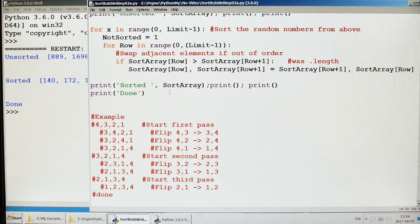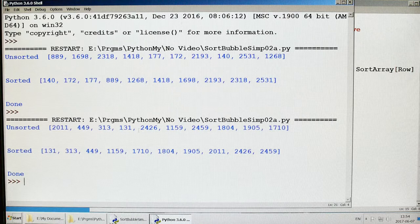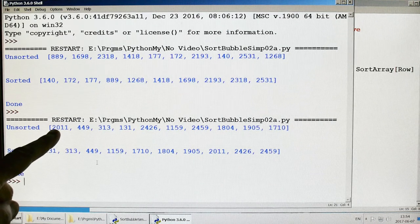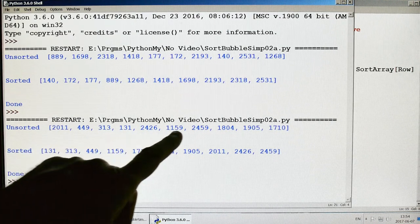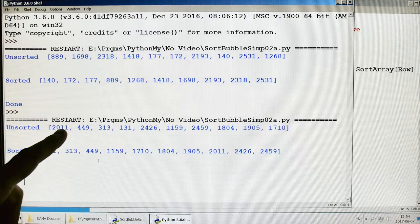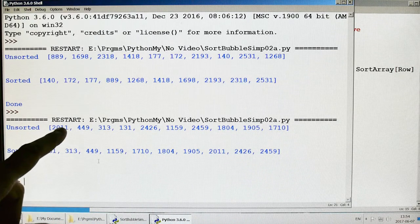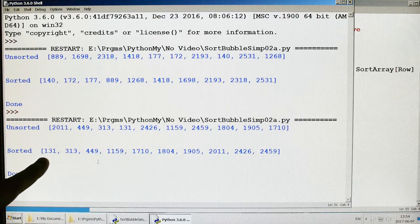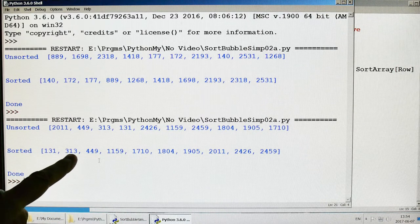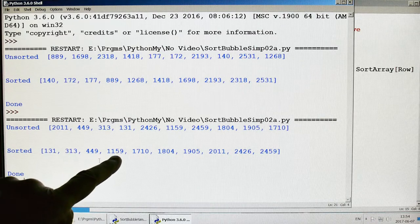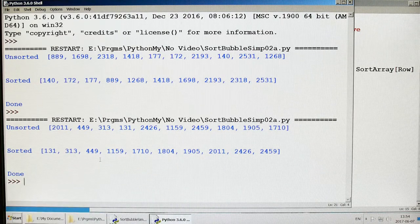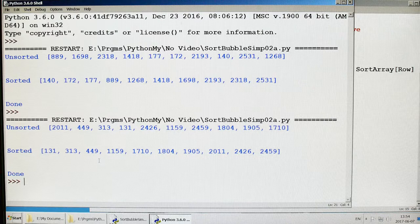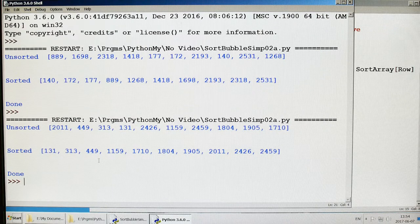So let's run it and prove that it actually works. Push the button. So here we have these are obviously unsorted. They're just random numbers. You can see clearly that the first two are not in range, the first three, the first four. So here it comes out. 131, 313, 449, 1159, et cetera, et cetera, until it's totally sorted. And then it prints done. So that's it.